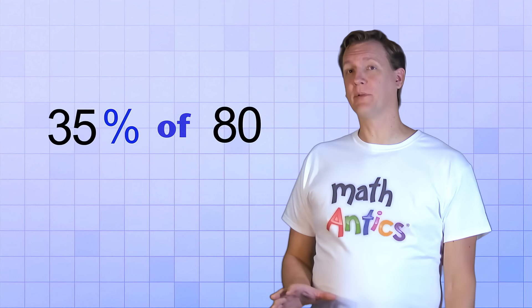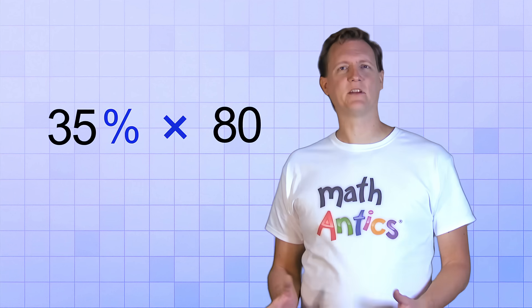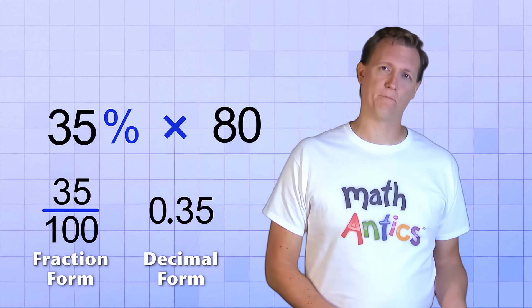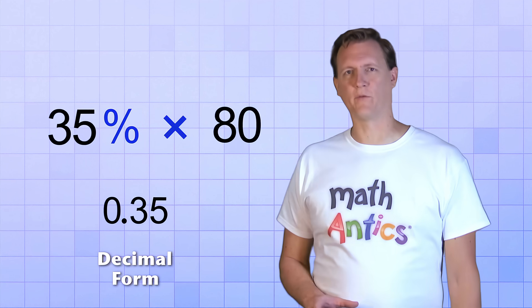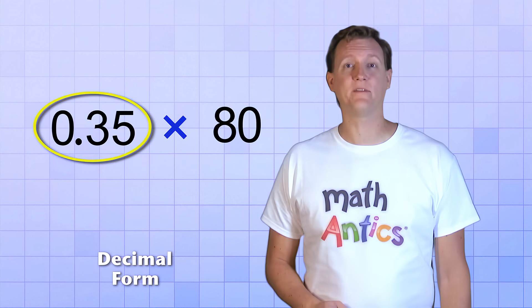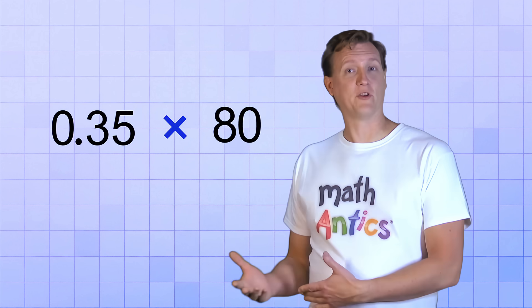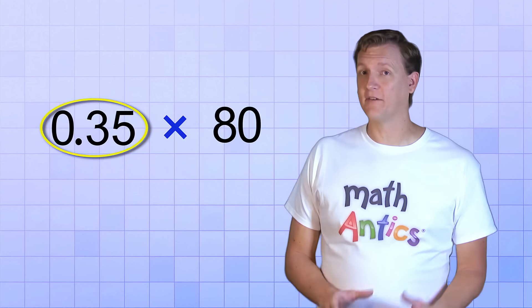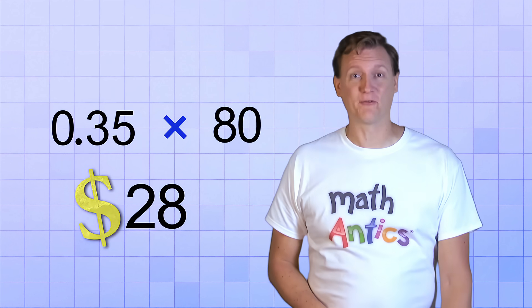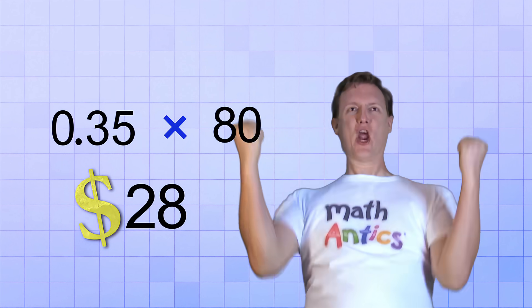Okay then, let's start by replacing the of with the times symbol. And next, we have to decide if we want to replace the percent with its fraction form or its decimal form. I think I'll use the decimal form for this one, which means I'll replace the 35% with 0.35. Now, all we have to do is multiply 0.35 times 80, and that's 28. That means you'll get 28 dollars if you help your friend walk those dogs. Cha-ching!